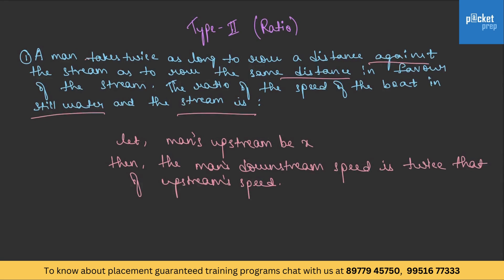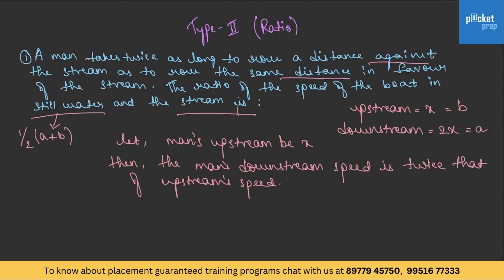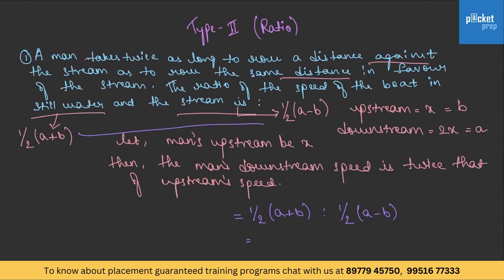Let us assume upstream speed to be x, so downstream speed is 2x. We denote upstream as b and downstream as a. Speed in still water is half of a plus b, and rate of stream is half of a minus b. The ratio is half of a plus b to half of a minus b. Substituting a equals 2x and b equals x: we get 3x over 2 to x over 2, which simplifies to 3 is to 1.